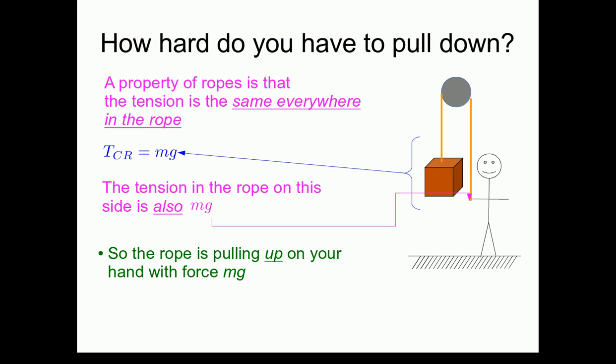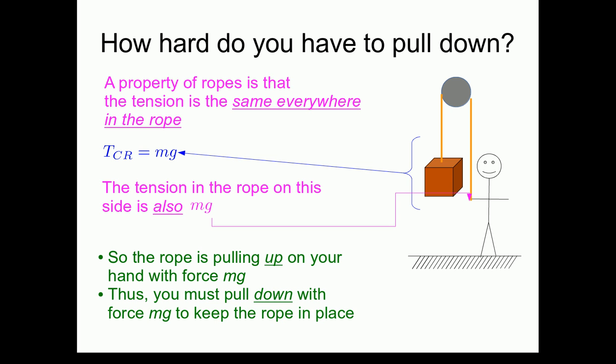As a consequence, the rope is pulling up on my hand with a tension force equal to the weight of the crate, mg. Which means that if I want everything to stay stationary, I have to pull down with a force equal to the weight of the crate, mg, to keep everything in place.